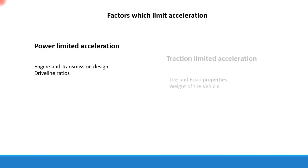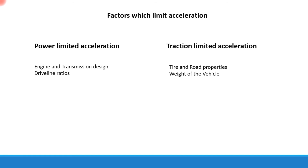At the top level, the factors which limit acceleration are two: power-limited acceleration and traction-limited acceleration. Power-limited acceleration is the acceleration limited by the engine and transmission design and the driveline ratios — if acceleration is limited by how much power the engine generates or the driveline ratios of the transmission, that is power-limited acceleration. If acceleration is limited by the tire and road properties or the weight of the vehicle, that is traction-limited acceleration.